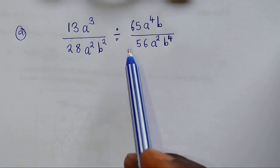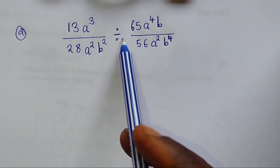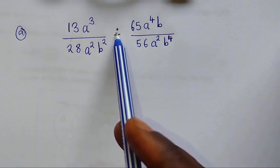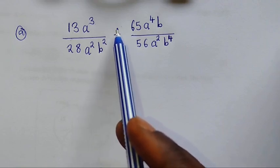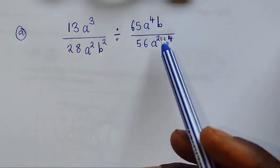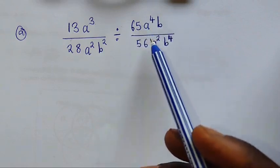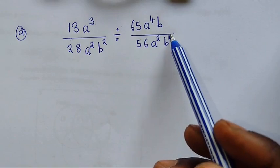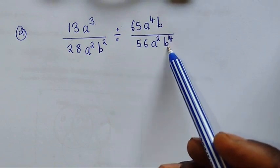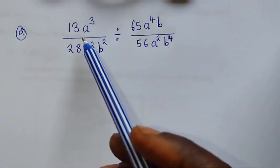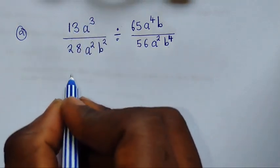The first thing — take note of the operation being used. You can see there is a division sign. When you have a division, you have to change the division to multiplication. When you change division to multiplication, the fraction that comes after the division sign gets flipped: the denominator becomes the numerator and the numerator becomes the denominator. The first fraction you keep the way it is.